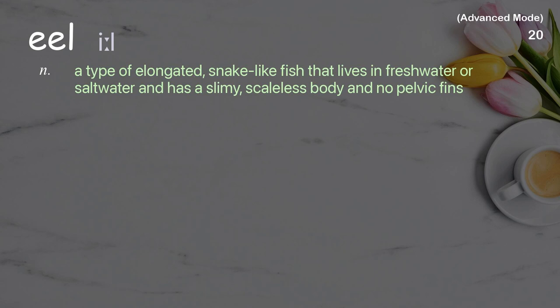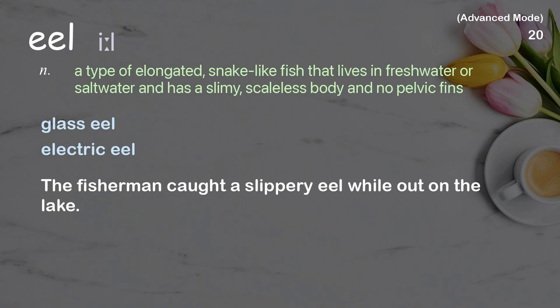Eel: A type of elongated, snake-like fish that lives in freshwater or saltwater and has a slimy, scaleless body and no pelvic fins. Examples: Glass eel, Electric eel. The fisherman caught a slippery eel while out on the lake.